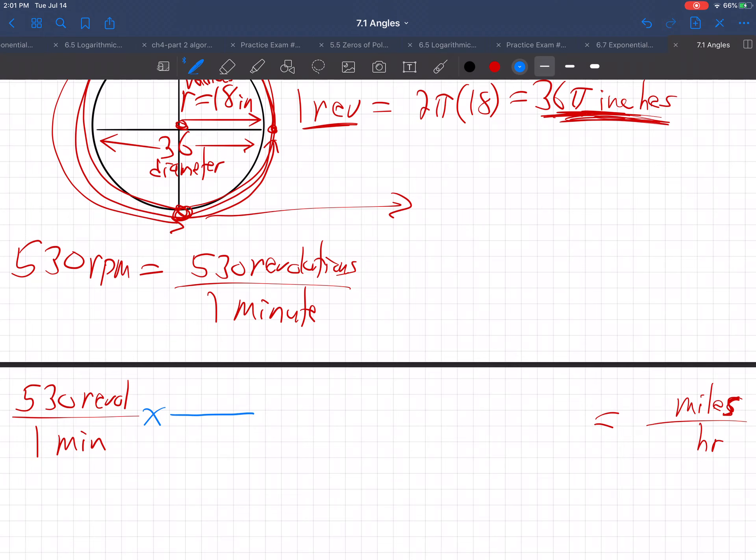You put on the bottom what you want to get rid of. I'm going to put revolutions. Why? Because I don't want revolutions in the end. So I want to get rid of revolutions. So put them on the bottom so they'll go away. And what's the connection? Right here, one revolution is 36 pi inches. So one revolution is 36 pi inches. That's the connection.